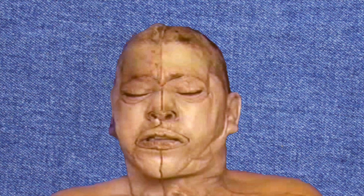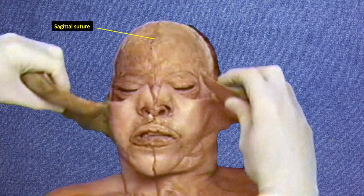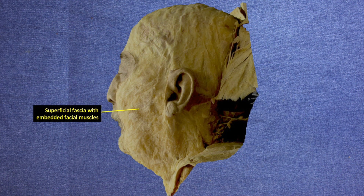As shown here, incisions are made in the skin of the face prior to its removal. The skin of the face is tightly adherent to the superficial fascia, but when possible it is removed without disturbing this fascia, because the facial muscles are located within the superficial fascia. After much tedious work, the intact superficial fascia is shown here after skin removal.